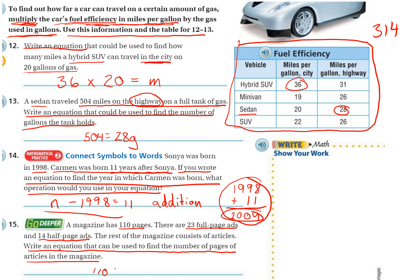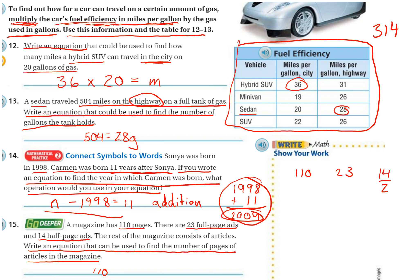We may do some erasing here, so don't be frustrated if I erase something. I'm just working this out. We have 110. We know 23 are full-page, 14 are half-page. So half-page, that would mean half of those. 14 half-pages, so that would be 7 whole pages. 14 divided by 2 would be 7 whole pages. So 23 plus 7.